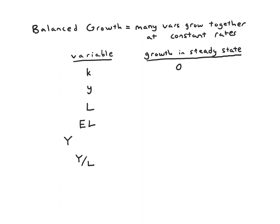But other variables might be growing, even if k isn't. So let's think about output per worker or per effective worker. Well, output per effective worker is just f of k, right? We have that we found in previous videos. So if little k isn't growing, then little y won't be growing. So both of these have no growth in the steady state, fitting what we had in the basic Solow model.